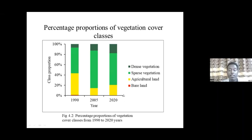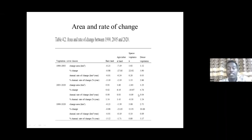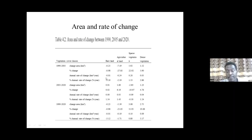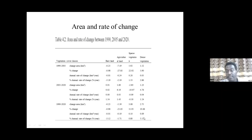The proportional vegetation cover classes show that the bare land area present in 1990 had largely disappeared by 2020, and the area coverage of dense vegetation increased significantly. The annual rate of change shows that bare land area was decreasing by 3.19 percent every year, while dense vegetation was increasing by 5.18 percent every year from 1990 to 2020. This indicates that vegetation coverage is increasing after watershed management activities.